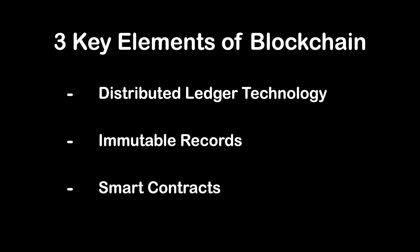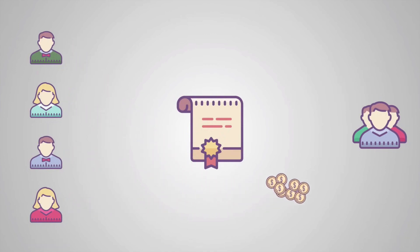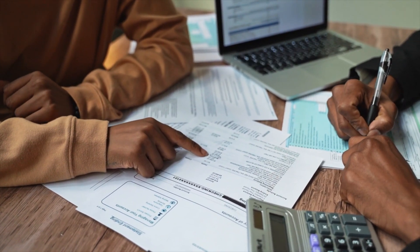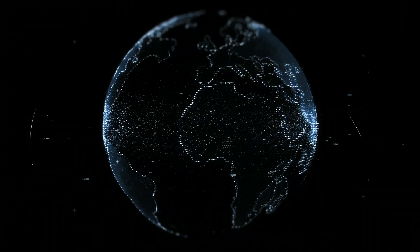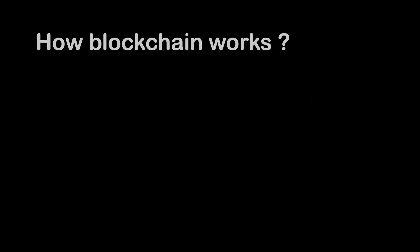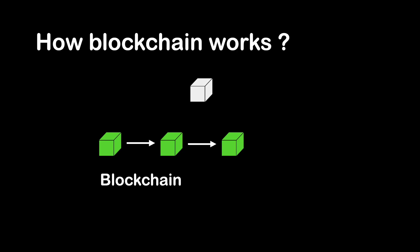The third key element is smart contracts. To speed transactions, a set of rules called a smart contract is stored on the blockchain and executed automatically. A smart contract can define conditions for corporate bond transfers, include terms for travel insurance to be paid, and much more. Basically, blockchain is powered by smart contracts.